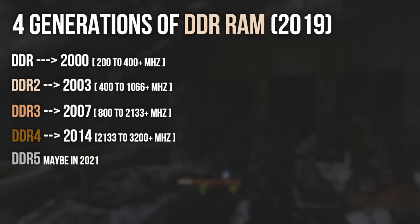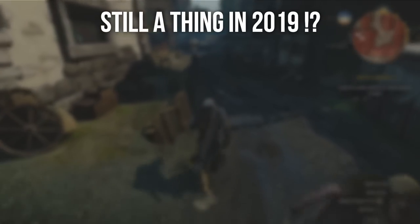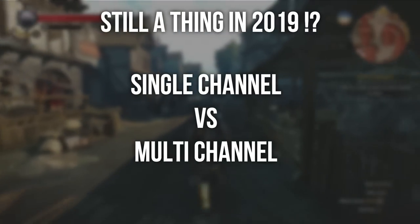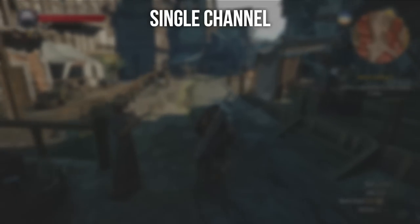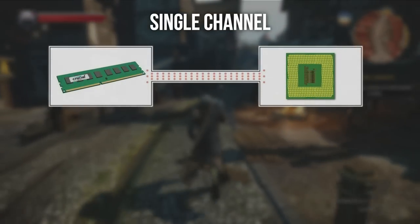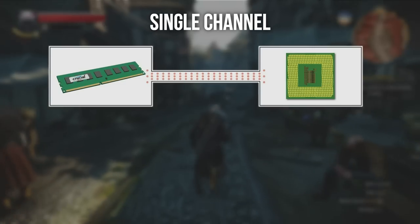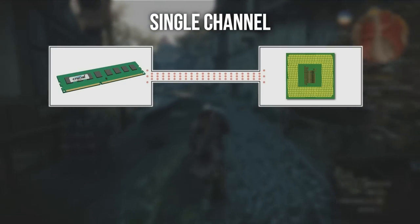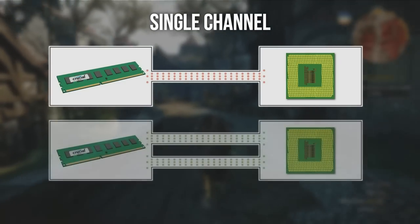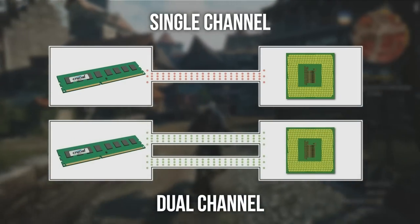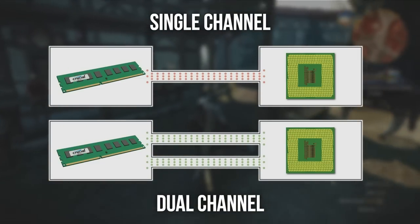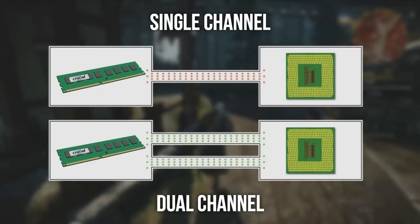Still in the RAM section, I want to clarify single channel versus multi-channel. Simplifying things to the max: single channel means the RAM is using one channel to connect with the CPU — think of it as a highway with only one road. Dual channel means the RAM uses two channels, giving double the bandwidth. The same applies to quad channel and octa channel.